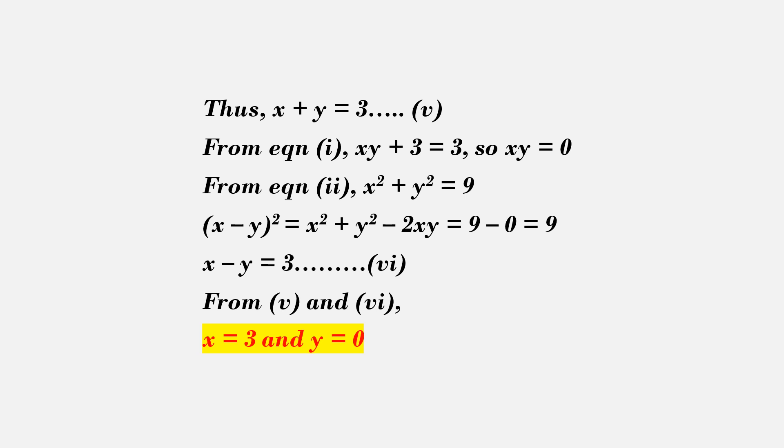From equation 1, xy plus 3 equals 3, so product xy equals 0. From equation 1, putting x plus y is 3, we get x squared plus y squared equals 9.